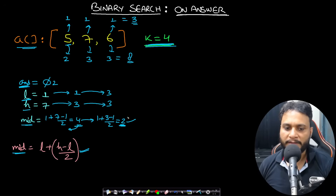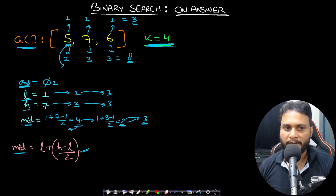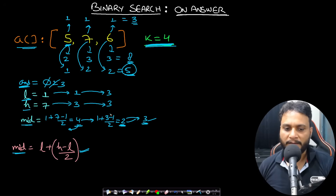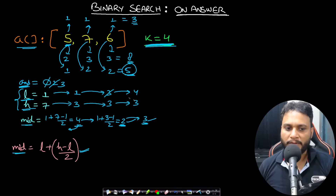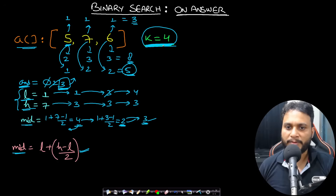Update answer to three and set low = mid + 1 = 4. Now low (4) is greater than high (3), so the binary search terminates. The answer is three — the maximum number of candies that can be assigned equally to four children.